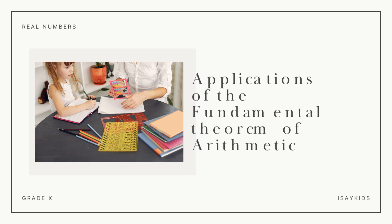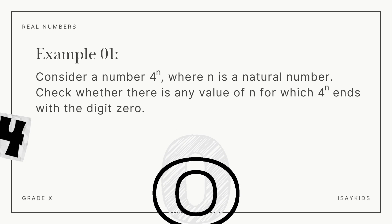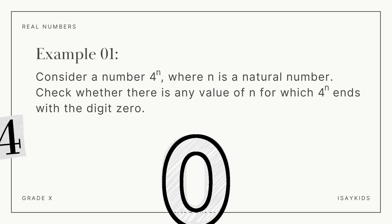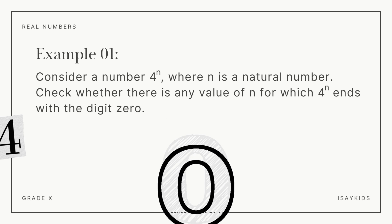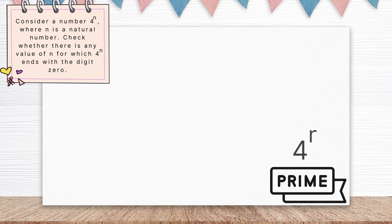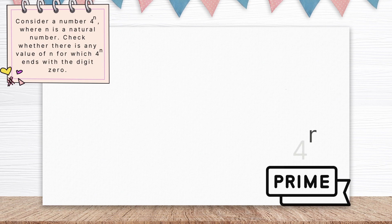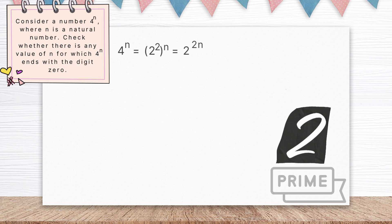Let's see some of the applications of the fundamental theorem of arithmetic. Consider a number 4 raised to the power n, where n is a natural number. Check whether there is any value of n for which 4 raised to the power n ends with the digit 0. Let's first make prime factors for 4 raised to the power n — it would be 2 raised to the power 2n. Hence, the only prime in the factorization of 4 raised to the power n is 2.